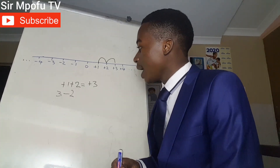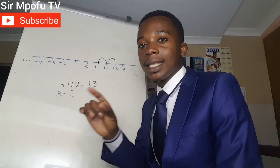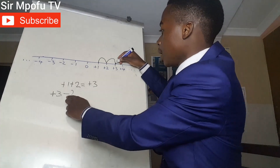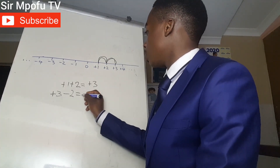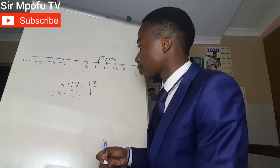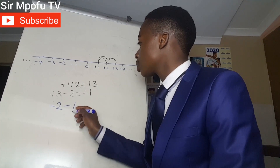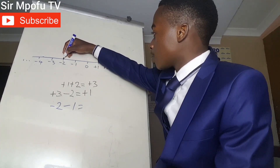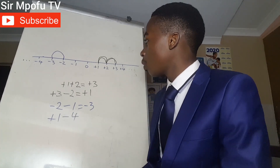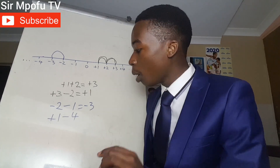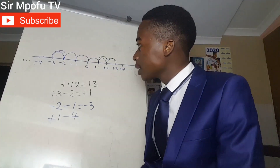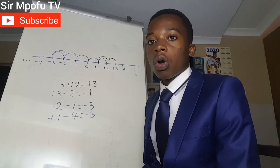Whenever you are subtracting, it means you are going back. For example, three minus two: if there is no sign, automatically there is a positive sign, so it's plus three. We go to plus three and move two times going back — one, two — so we land on positive one, meaning our answer is positive one. Another example: minus two minus one — we go to minus two and move one time going back, so our answer is minus three.